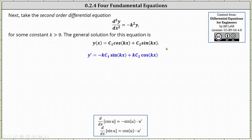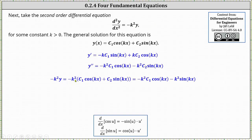Now we determine the second derivative. The derivative of negative k c sub one sine kx is negative k squared c sub one cosine kx, and the derivative of k c sub two cosine kx gives minus k squared c sub two sine kx. Then negative k squared times y equals negative k squared c sub one cosine kx minus k squared c sub two sine kx. Notice y double prime equals negative k squared y — we've verified the second derivative of y with respect to x equals negative k squared y.